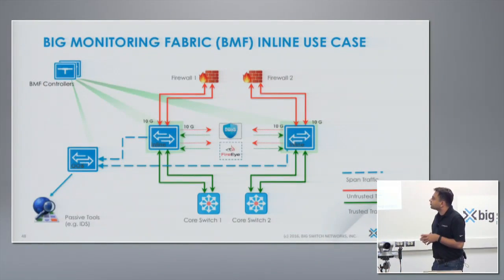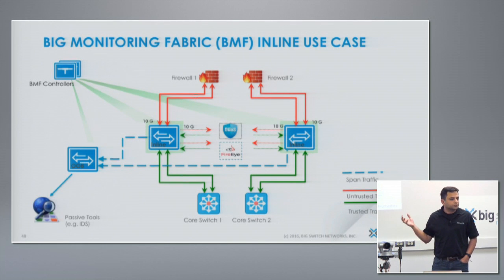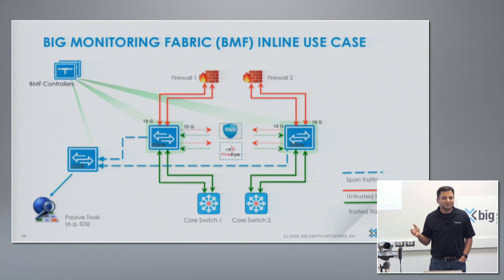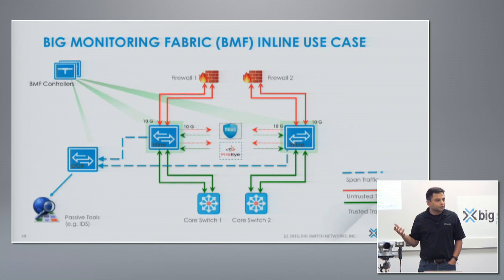One question that comes up a lot is: what happens if the controllers are not available — for example, due to a WAN link failure at a remote site? This actually happened with a customer doing a production pilot. The VM admin had deleted the controller VMs, but the customer didn't notice any network impact because whatever policies had been pushed stay in place until the switch is rebooted or changes are needed.